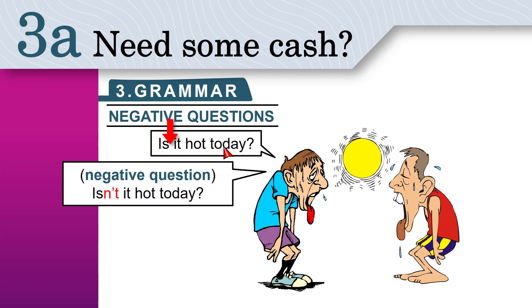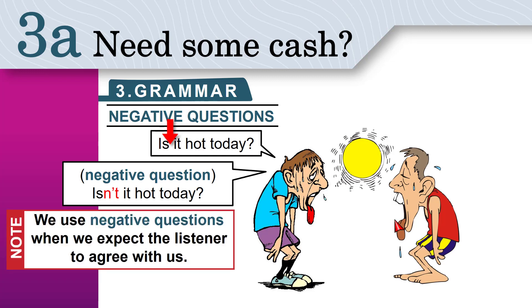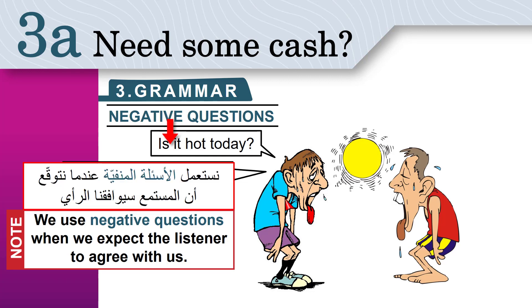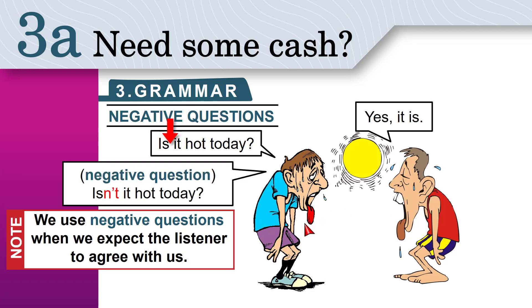You ask the normal question 'Is it hot today?' if you don't know the answer. But with the negative question 'Isn't it hot today?', you already know it is hot. You ask your friend this if you want them to agree with you — 'I want to share the moment with you, isn't it hot today?' And of course you answer 'Yes, it is.'